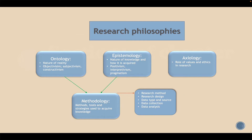The third branch of research philosophy is axiology, which deals with the role of values and ethics in research — is your research value-laden or value-free, and what are the ethical considerations applicable to your research? The fourth and last branch is methodology, which deals with the methods, tools, and strategies used to acquire knowledge. Of the four research philosophies, ontology and epistemology greatly influence the methodology that a researcher is going to adopt.